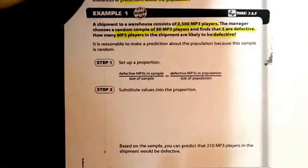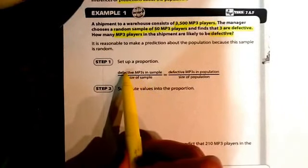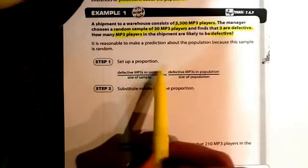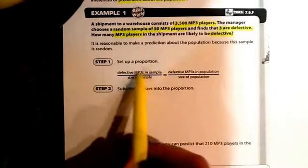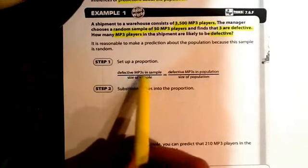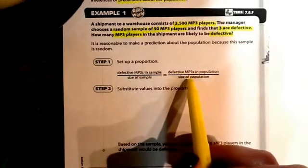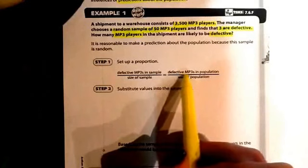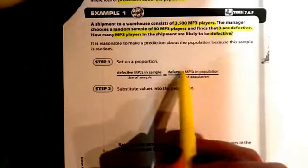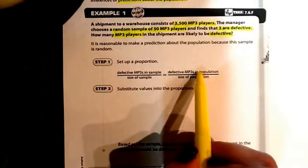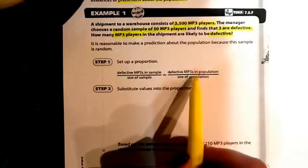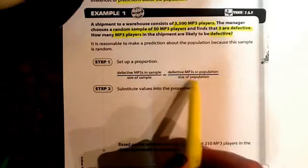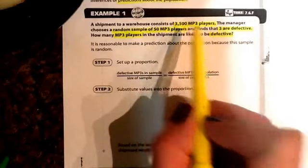We're going to set up a proportion. We're going to be putting the defective MP3 players in the sample over the size of the sample—it's like our total. On the other side of our proportion, we're going to be putting the defective MP3 players in the population. That's what we're looking for. This would be our variable, and we know the entire population is 3,500.